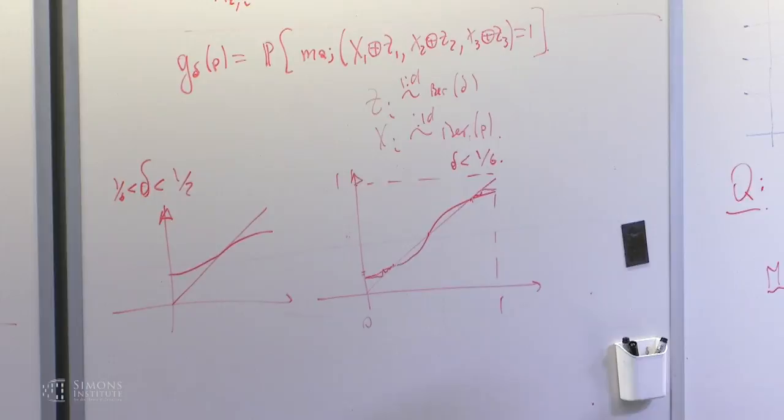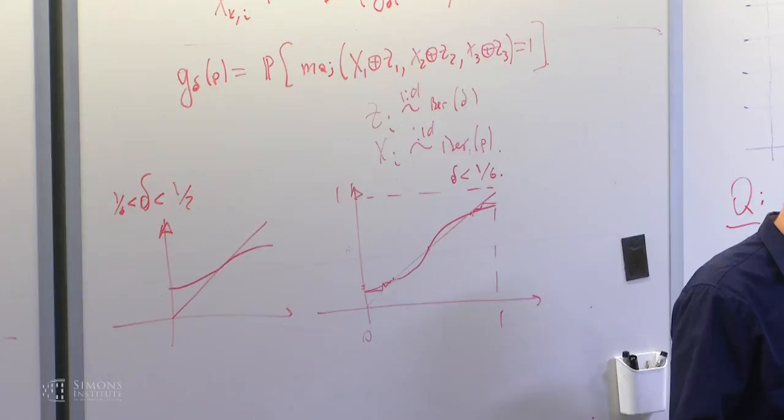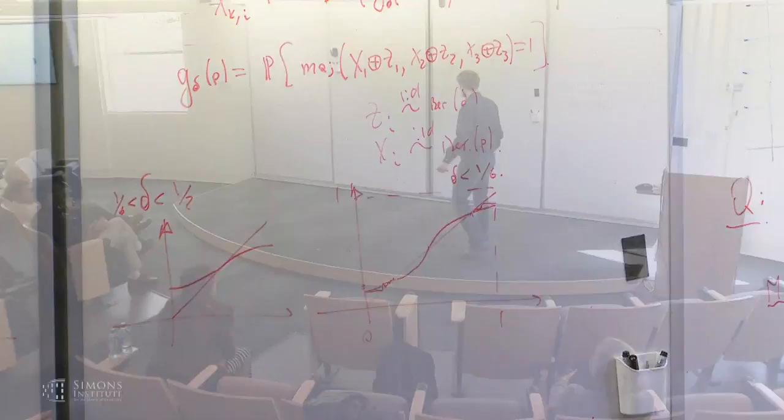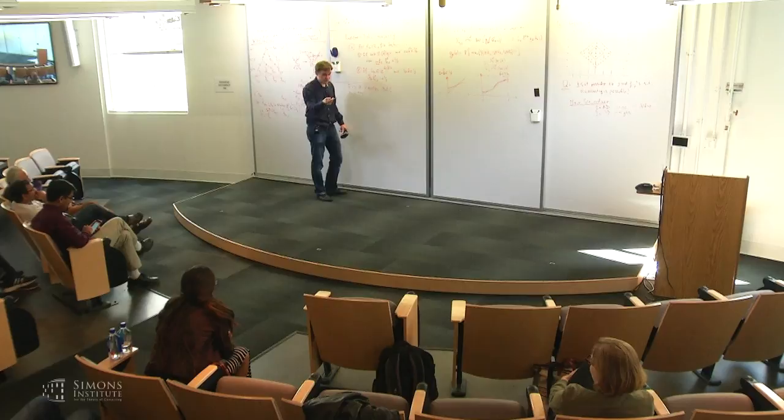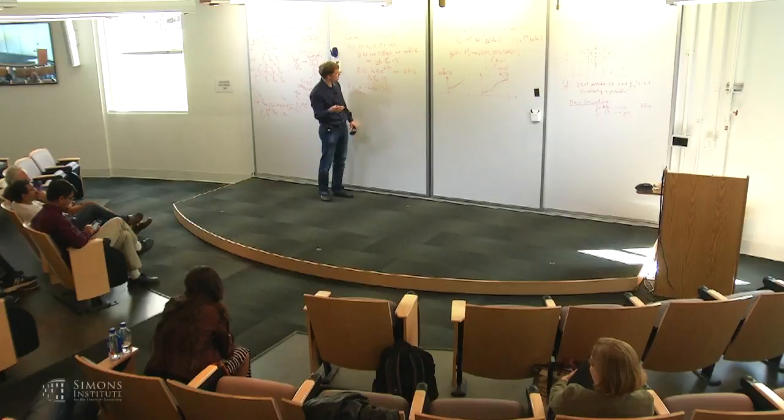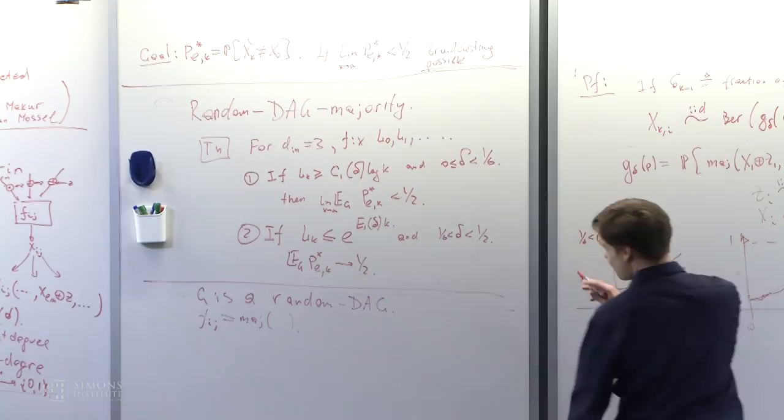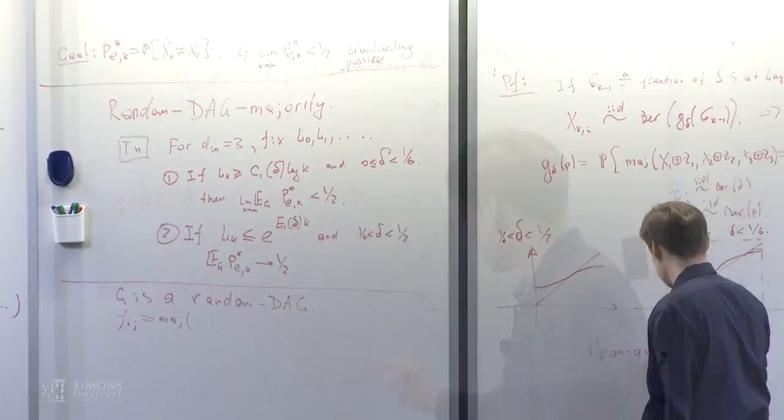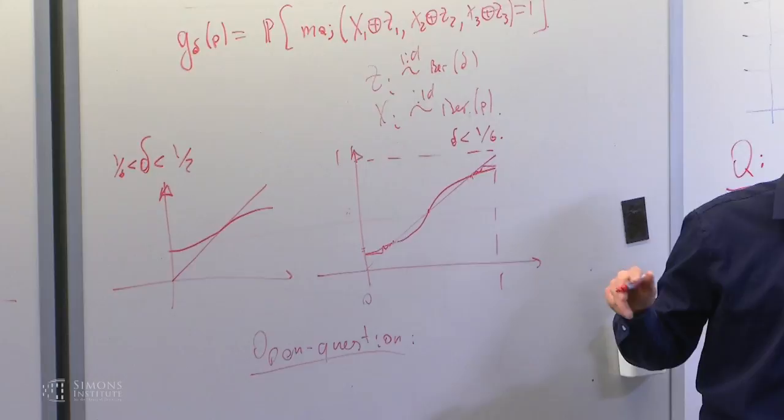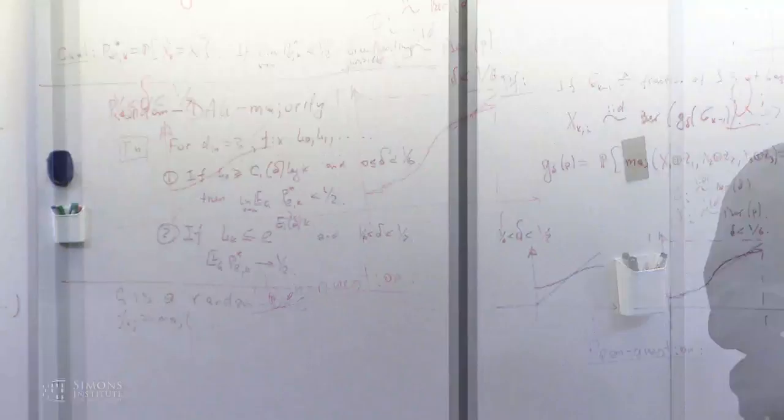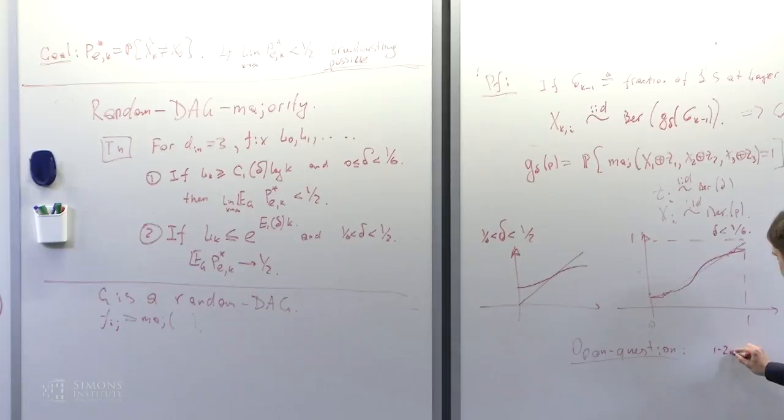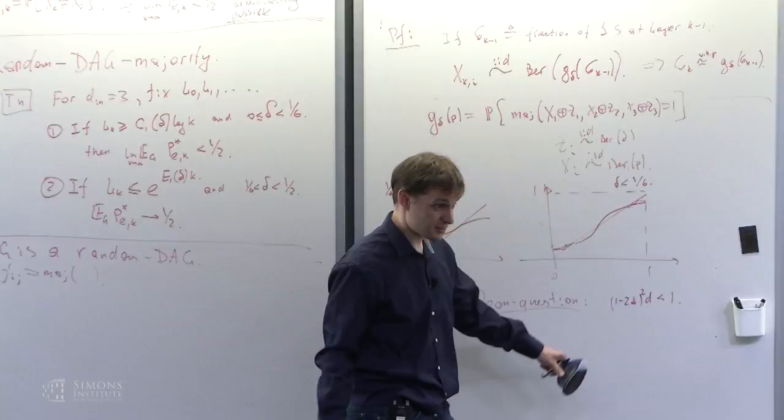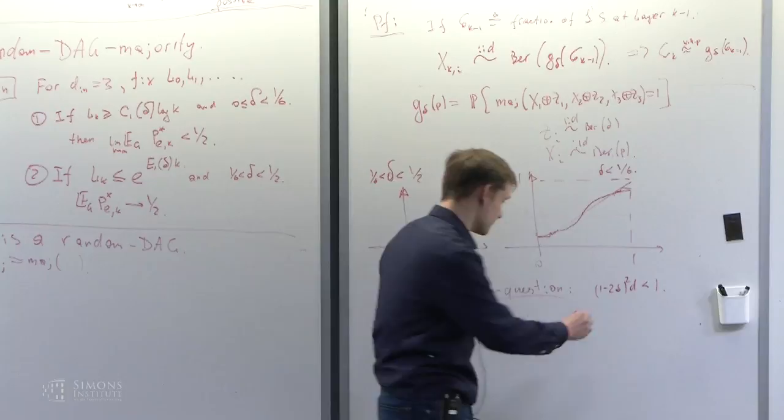How does g look? If δ is less than 1/6, it looks like this - symmetric around point half-half, with three fixed points. If you start at 0, you slowly grow up through these iterations to this fixed point. If you start at 1, you come to this fixed point. So the average magnetization completely tells you the answer. For δ greater than 1/6, g has only one fixed point, and 0s and 1s become merged.